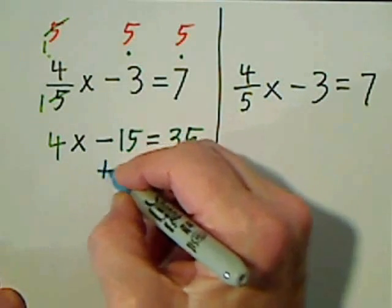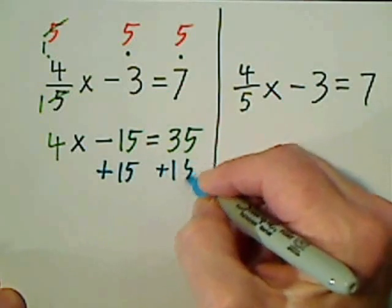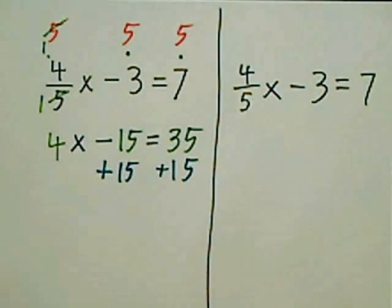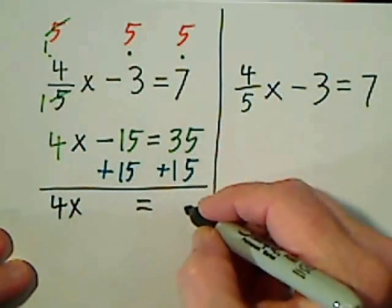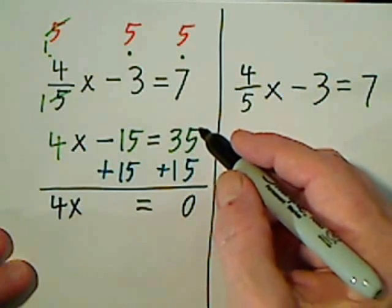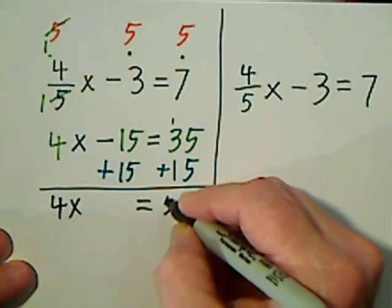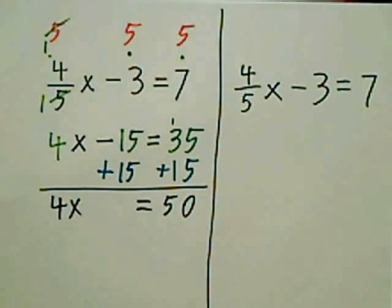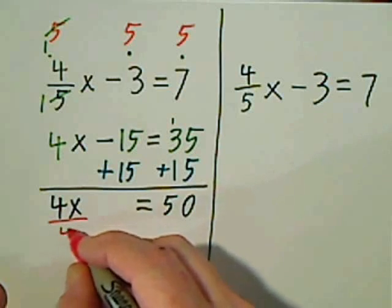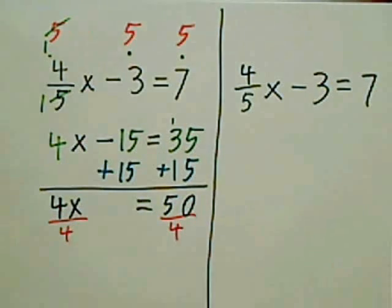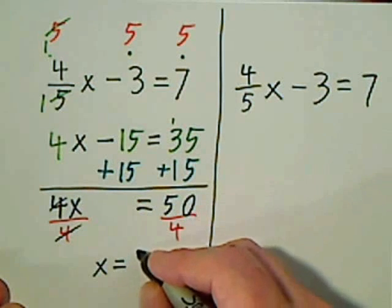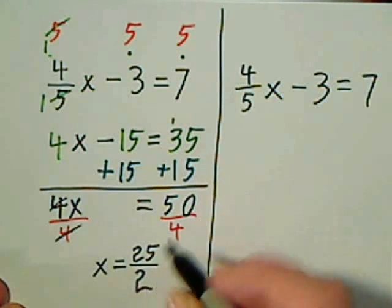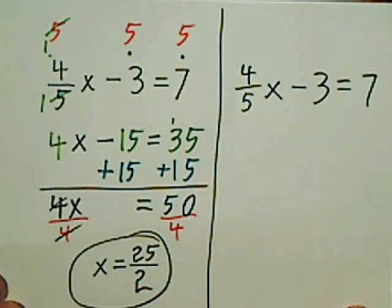We'll get rid of the 15. Just draw a line here. So we have 4x equals 50. Get rid of that four. And then four goes into four once. So you have x equals, and we could reduce that to 25 halves. And that's perfectly good answer. You don't have to write that as a mixed number.